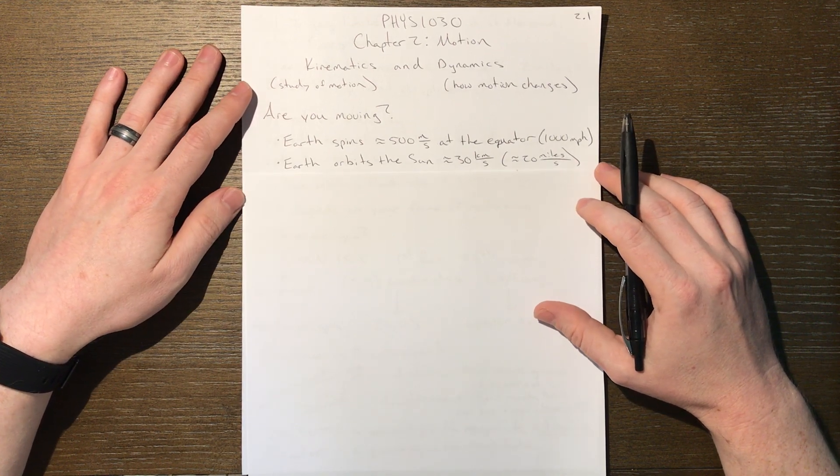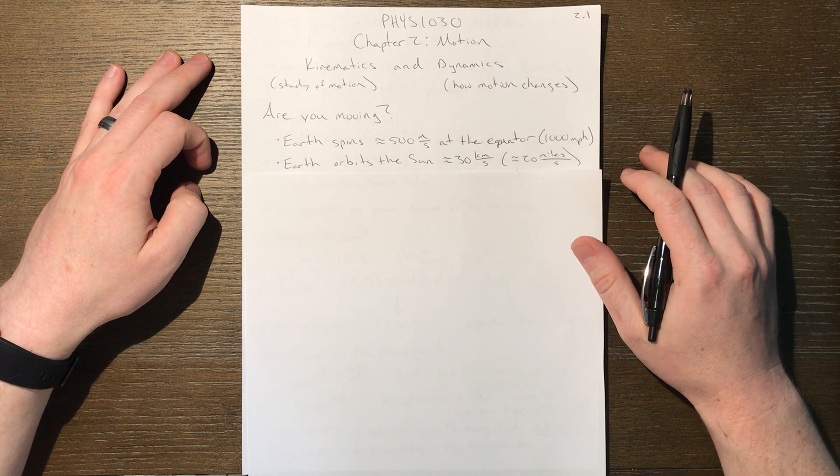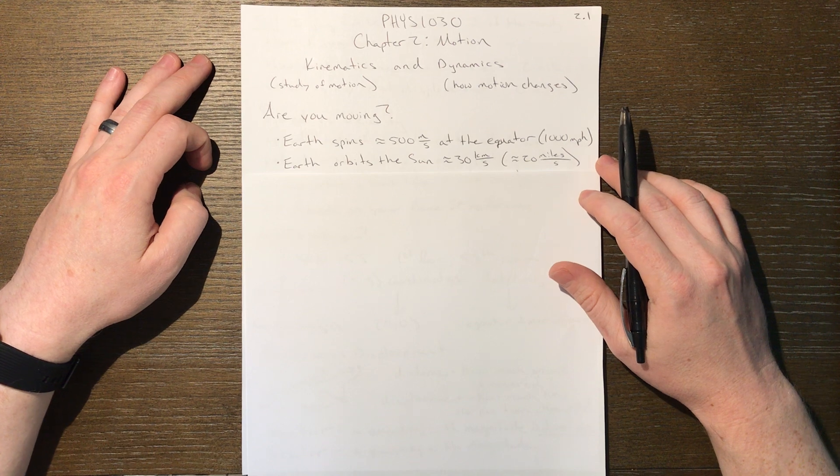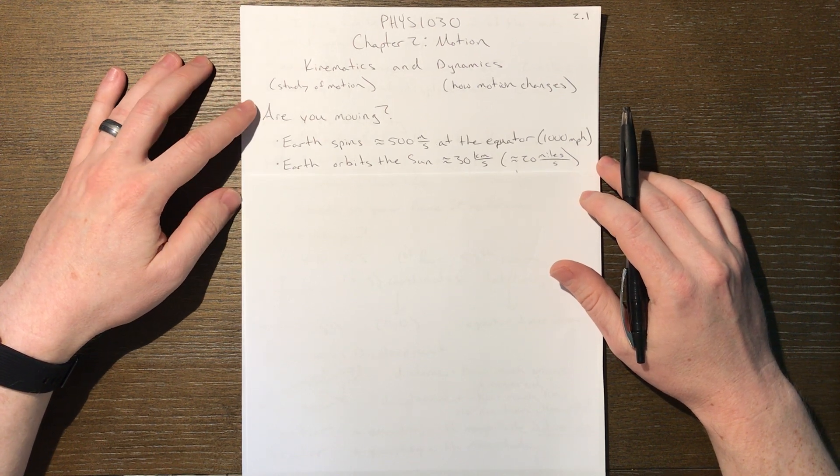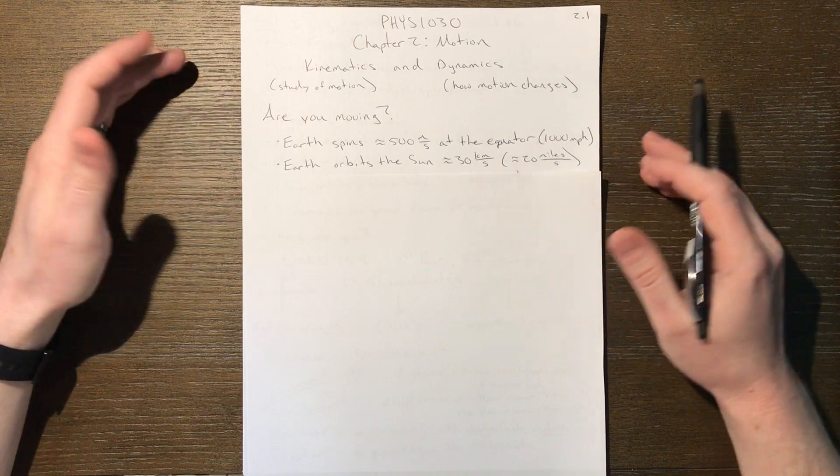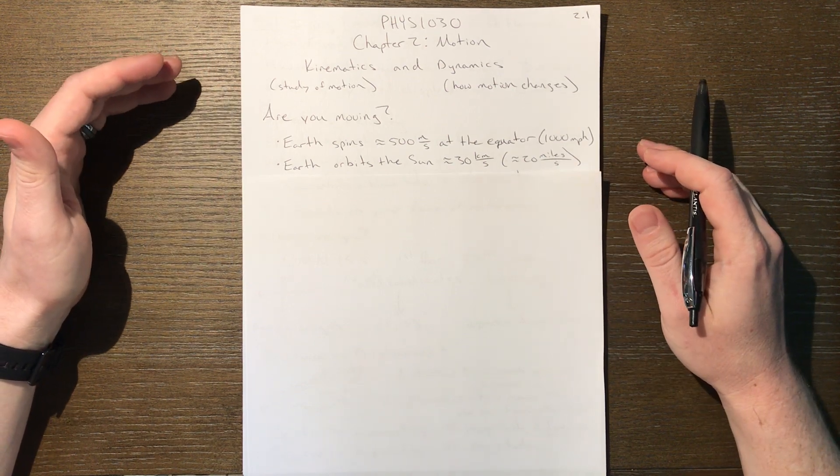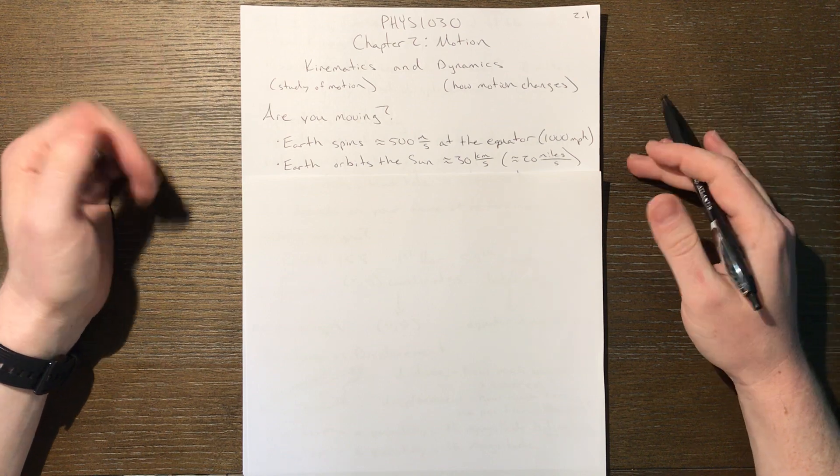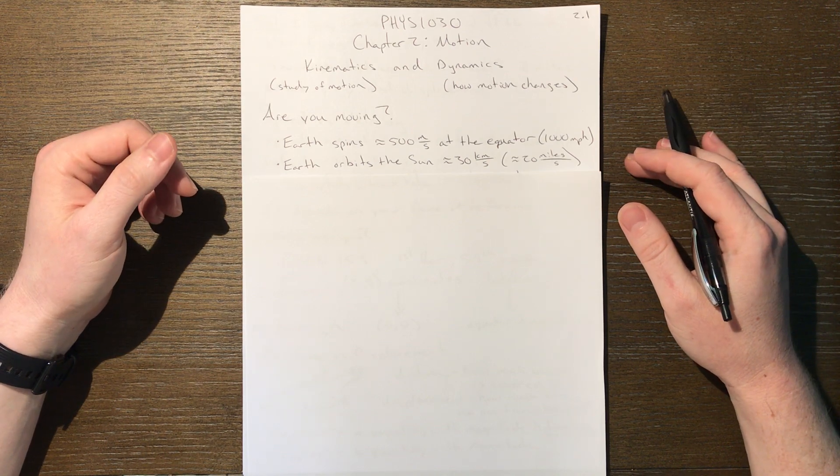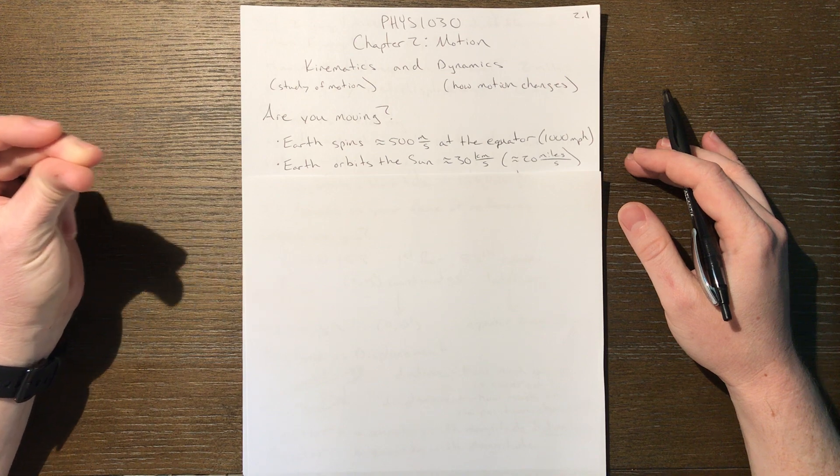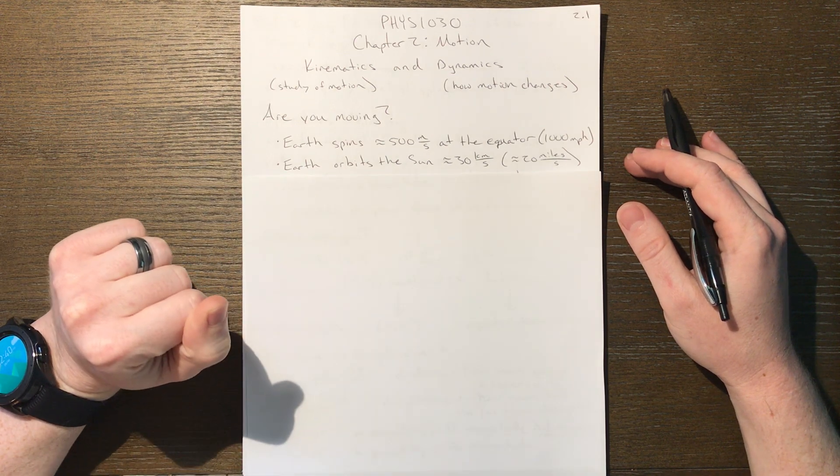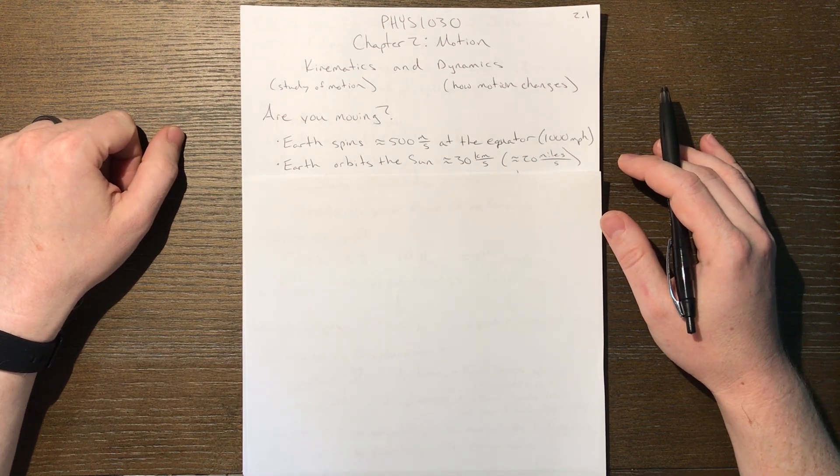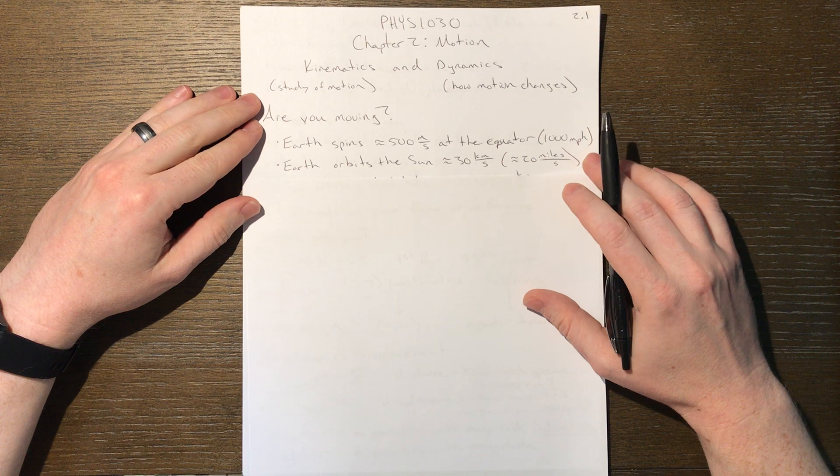We could take that even further. The Earth also is orbiting the sun, and it does so at about 30 kilometers per second. That's a lot of ground to cover every second. Put into terms of miles, a slightly more familiar unit, like 20 miles per second. I always joke that my house is a little less than 20 miles from campus - it sure would be nice if my commute was only one second.